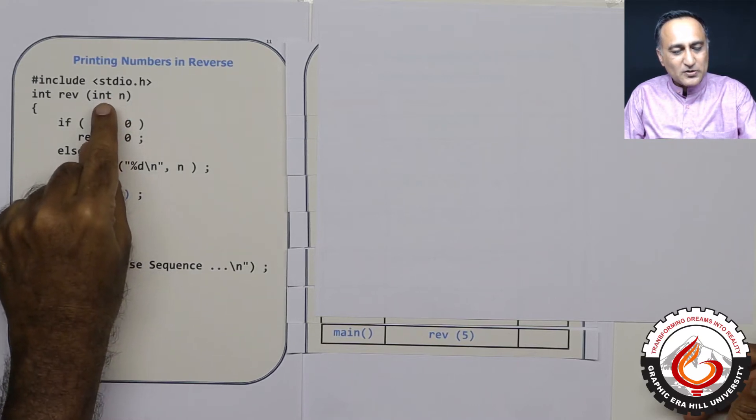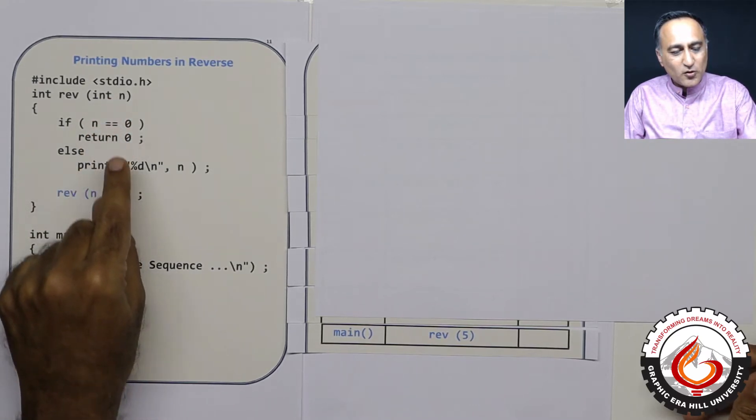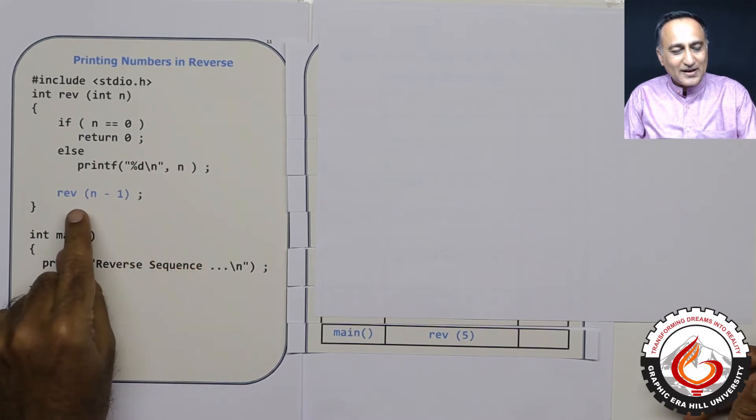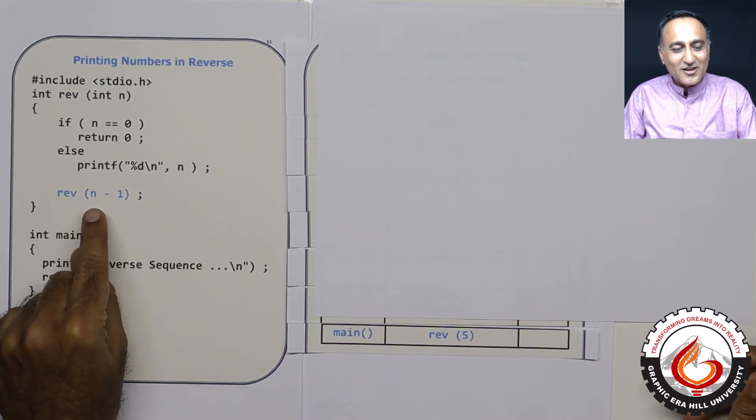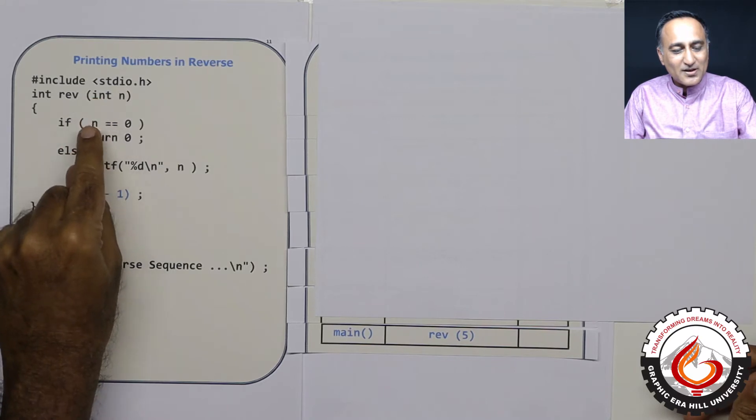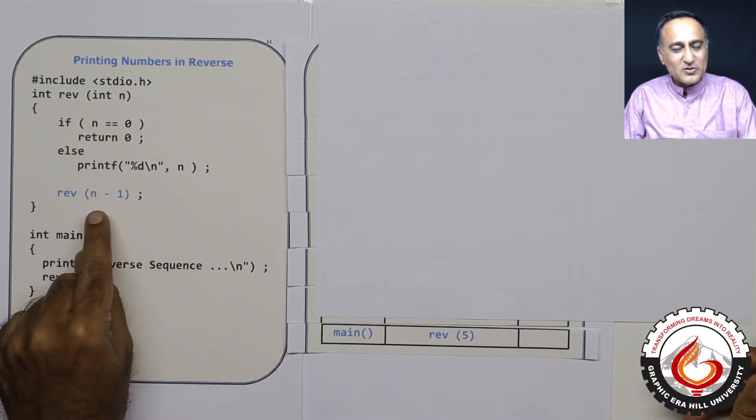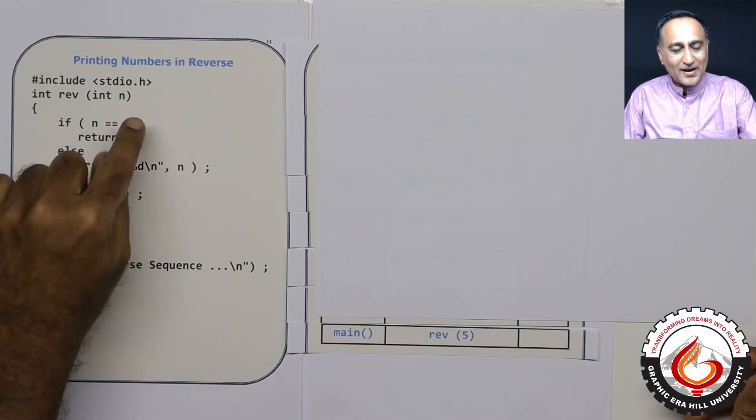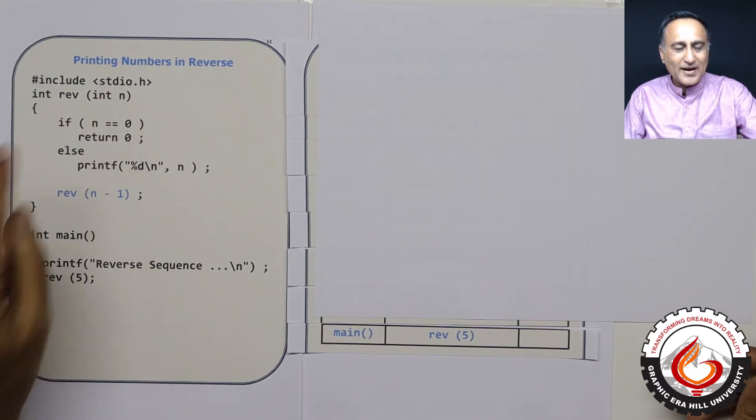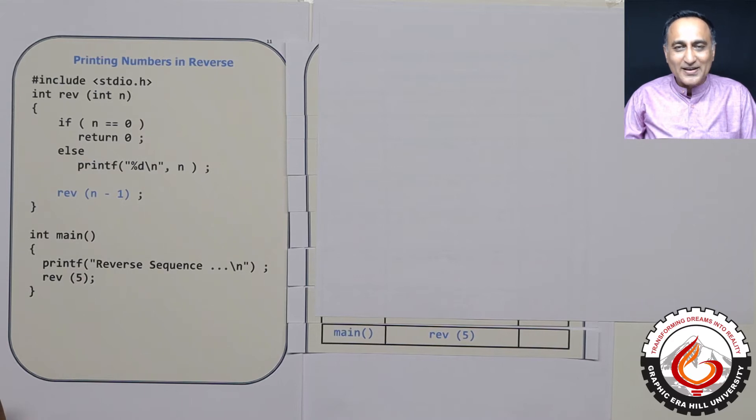So next time it becomes 4. Is 4 equal to 0 is false. So it's going to print 4. Next time I'm going to call reverse with 3. It's going to come here. 3 equal to 0 again is false. It will print 3. Reverse becomes 2. It will go back. So this way it will continue and start printing from 5 all the way till 1.